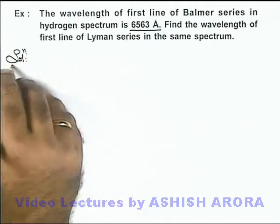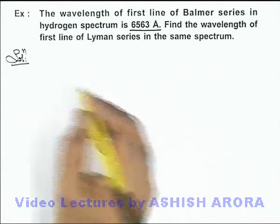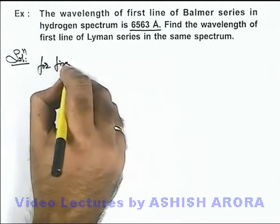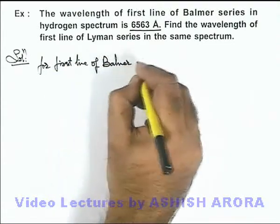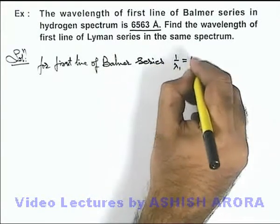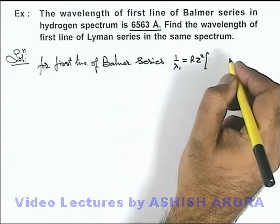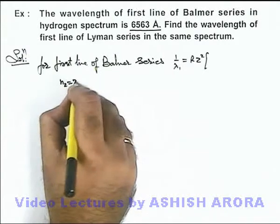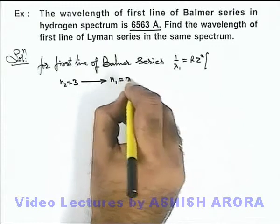The wavelength in any transition of a hydrogen atom can be calculated using the Rydberg formula. So for the first line of the Balmer series, the wavelength can be given as 1/λ1 = R·Z² multiplied by (1/n1² − 1/n2²). For the first line of the Balmer series, n2 is taken as 3 and n1 is equal to 2.